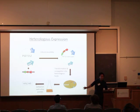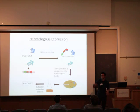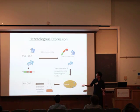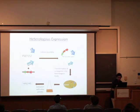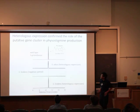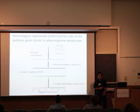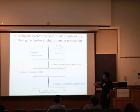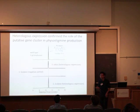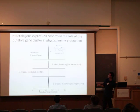You can see that the wild-type Streptomyces sp. makes physostigmine as our positive control, and our heterologous host does not make it — that's the negative control. S. lividans is also a negative control. When we put the cluster into S. albus and S. lividans, you can see that it produced physostigmine at a retention time of around 10.5 minutes, and this is confirmed by mass spectrometry.